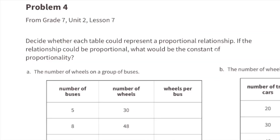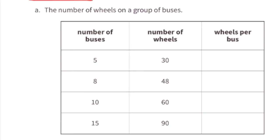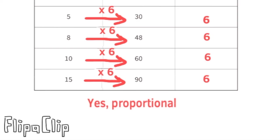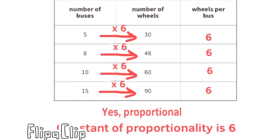Problem 4 from 7th grade Unit 2, Lesson 7: decide whether each table could represent a proportional relationship, and if so, what is the constant of proportionality? Part a: the number of wheels on a group of buses — 5×6=30, 8×6=48, 10×6=60, 15×6=90. This is proportional with a constant of proportionality of 6, since you always multiply the number of buses by 6 to find the number of wheels.